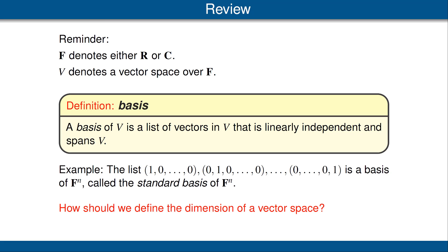Now we come to the question of how we should define the dimension of a vector space. Intuitively, we want the dimension of R² to be 2, the dimension of C³ to be 3, and so on, so that the dimension of Fⁿ should equal n. That suggests that perhaps we should define the dimension of a vector space to be the number of vectors in a basis for that vector space.